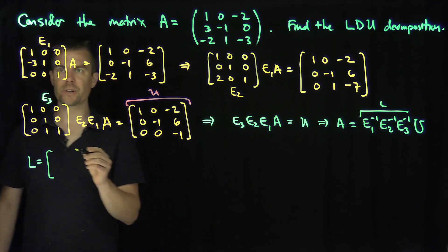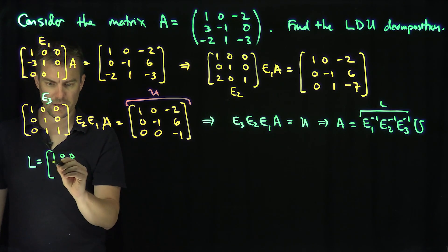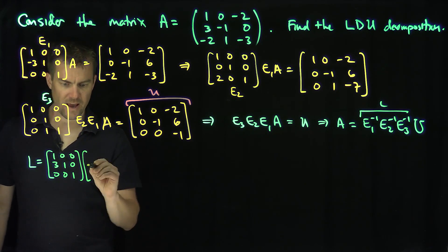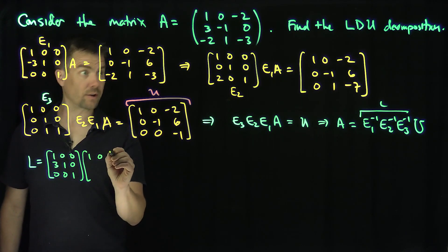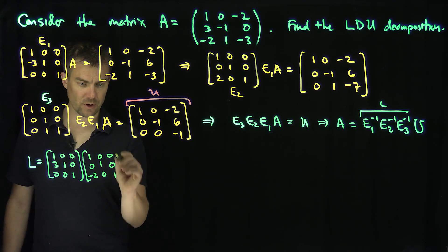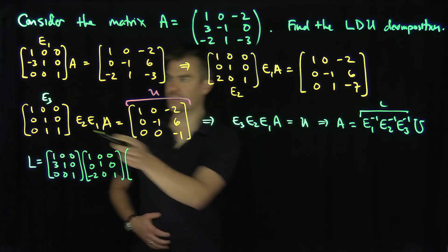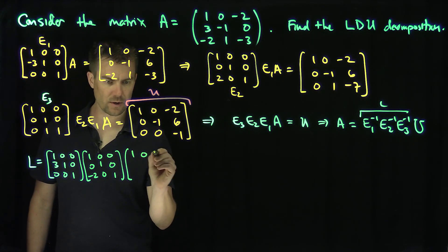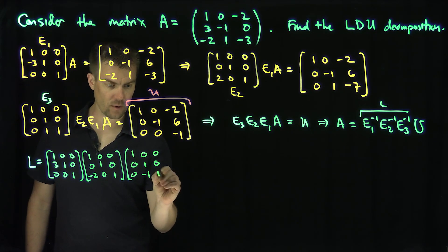E1 inverse is: 1, 0, 0, 3, 1, 0, 0, 0, 1. E2 inverse is: 1, 0, 0, 0, 1, 0, negative 2, 0, 1. And E3 inverse is: 1, 0, 0, 0, 1, 0, 0, negative 1, 1.